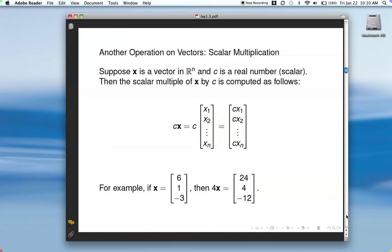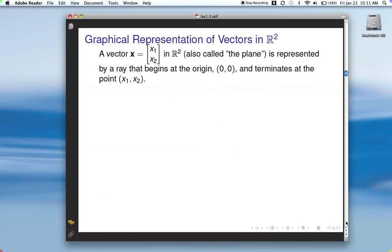So for example, here's your x. You want to multiply 4 times x. Then you just multiply each component in the vector by 4.